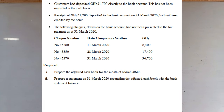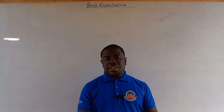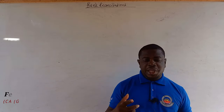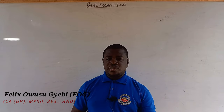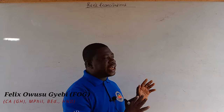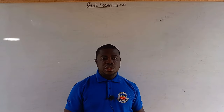Required: First, prepare the adjusted cash book for the month of March 2020. Second, prepare a statement on 31st March 2020 reconciling the adjusted cash book with the bank statement balance. So this is the question we are going to solve. What I'm going to do now is prepare the adjusted cash book and the bank reconciliation statement. As we read, we input the figures to where they are supposed to be, so by the time we finish reading, we will have finished solving the adjusted cash book.